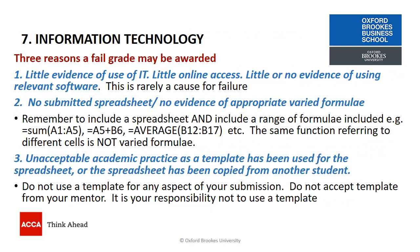Criteria 7 relates to information technology and there are three reasons a fail grade may be awarded. First of all, little evidence of the use of IT — but that's rarely a cause for failure. More common is that students either forget to submit a spreadsheet, or they don't provide appropriate varied formulae within their spreadsheet. Lots of different functions exist in Excel, so please use a range of these such as SUM, standard deviation, average, or even addition, multiplication, division and so forth. Using the same function but referring to different cells is not varied formula, and you would fail if you just did this.